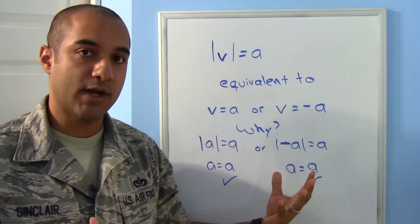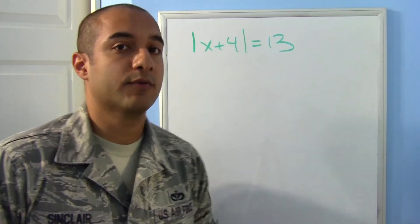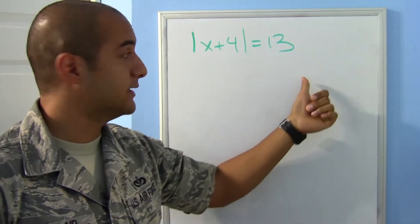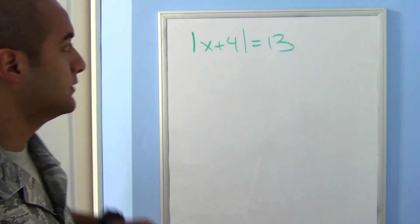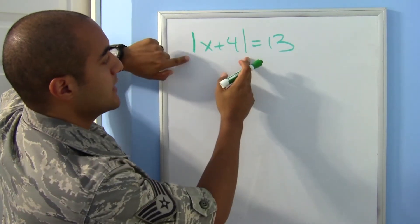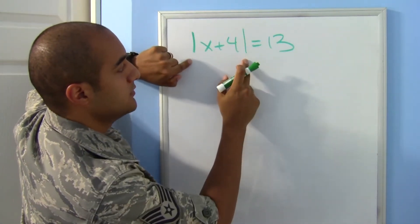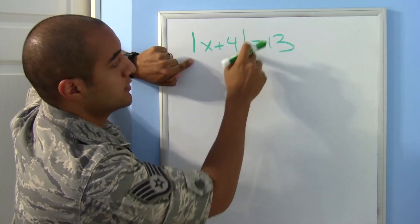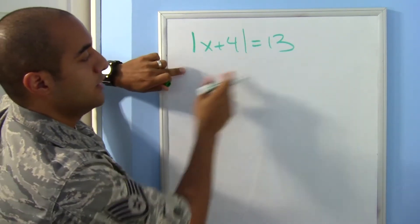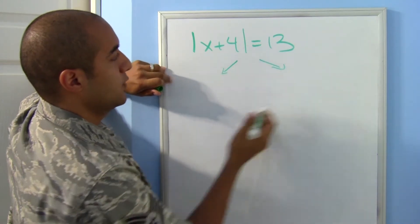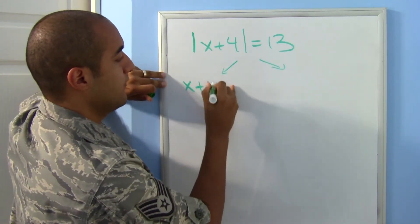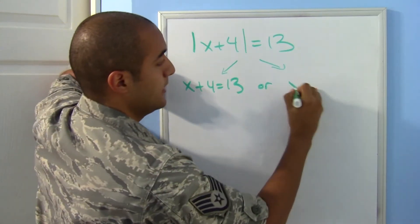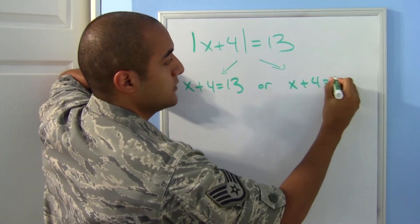Let's put that into practice. Starting with a simple one: the absolute value of x plus 4 is equal to 13. The absolute value expression is already alone, so we do our split: x plus 4 equals 13, or x plus 4 equals negative 13.